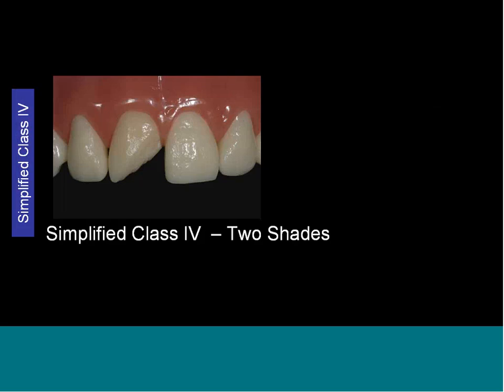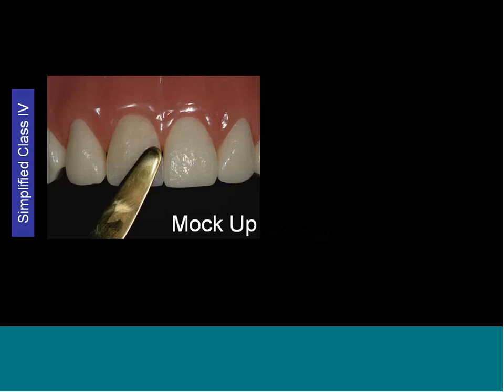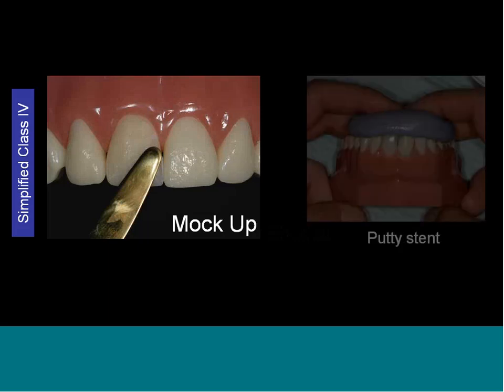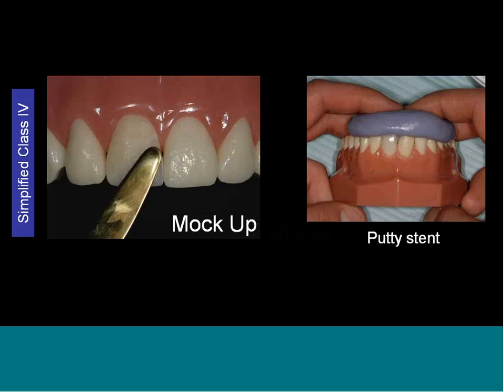Let's talk about a simplified class IV composite. Simplified means we're talking about two shades — that gives a little depth of color, a little anatomy, a little bit of polychromicity. If we're going to do a class IV and choose the mock-up route, we use some old composite to build it up, get the contours right, then make a putty stent, and we're ready to set up the restoration.